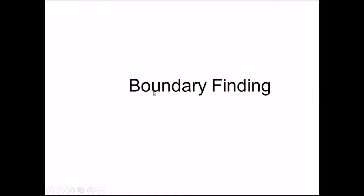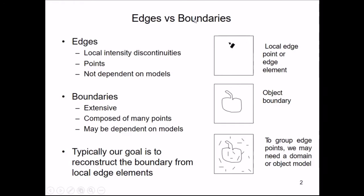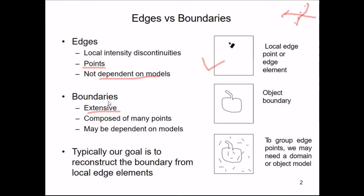Let us talk about boundary finding. First, let us see the difference between edges and boundaries, since we have already seen edge detection. Edges have local intensity discontinuities, while boundaries can be extensive. Edges are points — just a few points joined as a line — and there is a sharp change of intensity. Edges are not dependent on models, so this is an example of a local edge point or edge element.